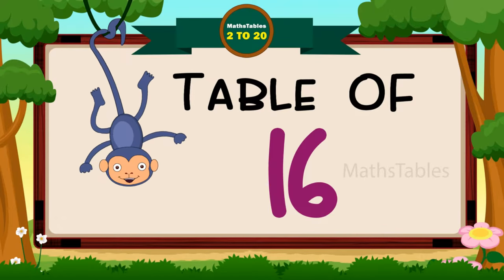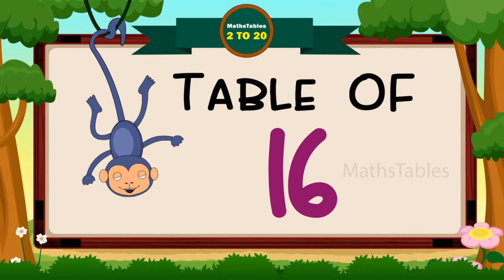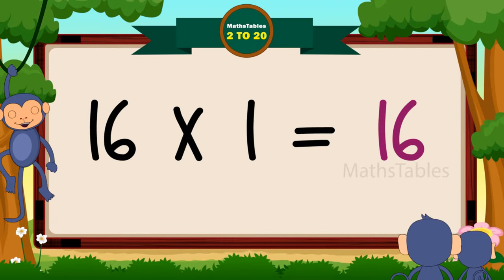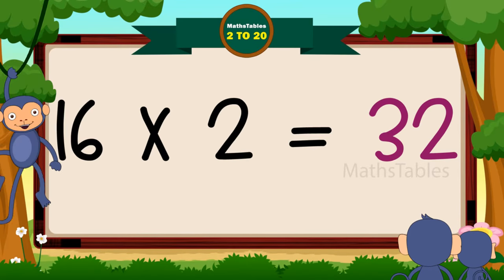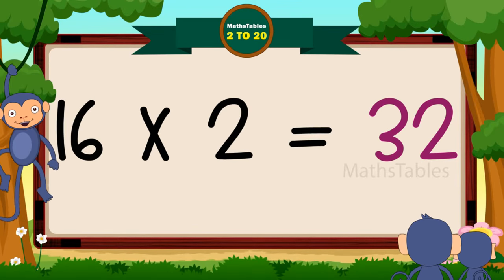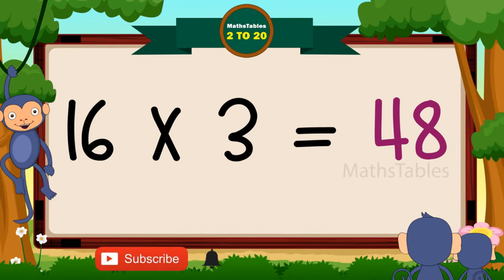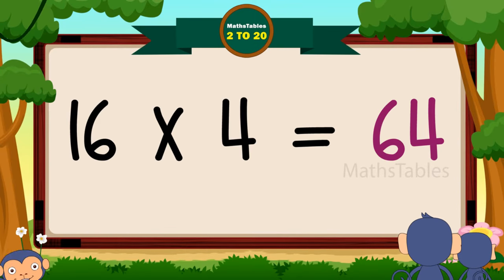Hi friends, now we will learn the table of 16. 16 ones are 16, 16 twos are 32, 16 threes are 48, 16 fours are 64.